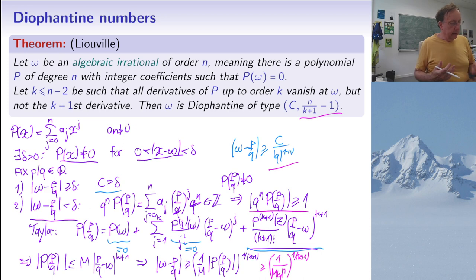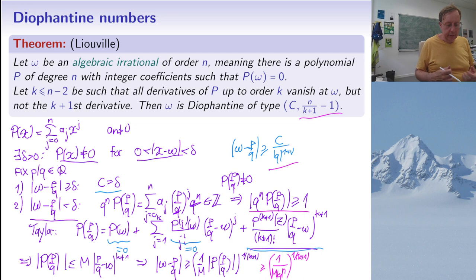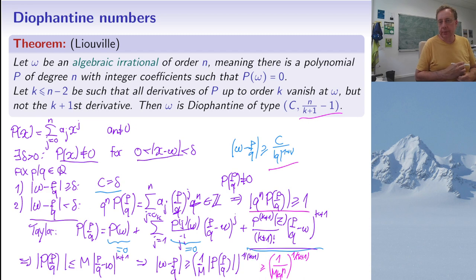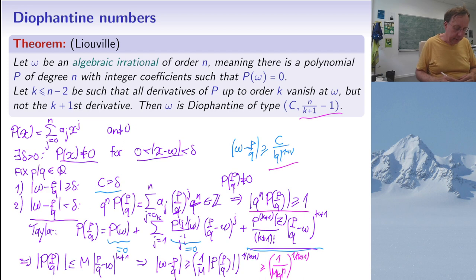This is Liouville's theorem. It is not optimal — there is an improvement by Roth giving more precise values on the smallest ν one can take. But this will be enough for us.